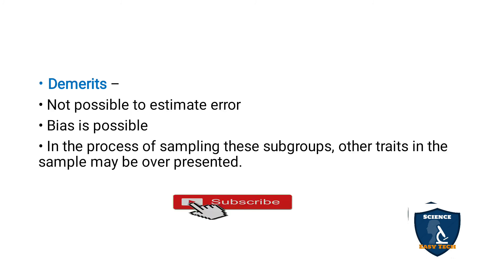Demerits of quota sampling: it is not possible to estimate error, sampling bias is possible, and sometimes the subgroups may not represent the population. Sometimes they may have too many characteristics or traits, or characteristics may be subtle.